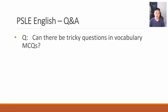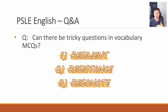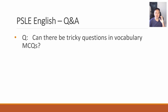Can there be tricky questions in the vocabulary MCQs? Yes. Some of the options are deliberately made to look very similar — for example, the spelling of the four words are very similar, like resilient, resistance, resonate, and so on. Therefore students can get easily confused. Please read the vocab options carefully before selecting your answers.